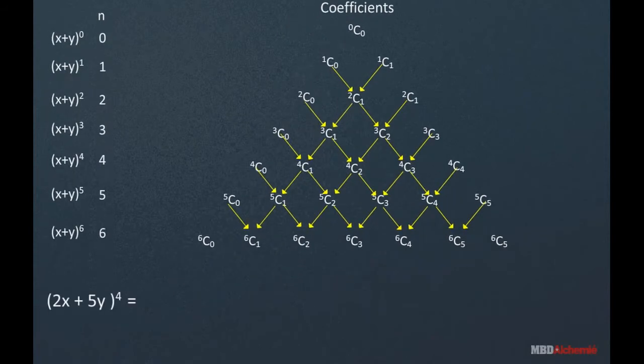So if we want the value of 2x plus 5y to the power 4, we just take the numbers in the row for small n equal to 4.